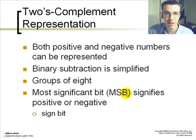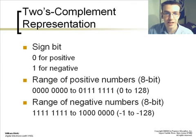The two's complement representation. Both positive and negative numbers can be represented. Binary subtraction is simplified by this representation. And it's usually done in groups of 8. The most significant bit, or the MSB, signifies positive or negative sign. The sign bit, 0 for positive or 1 for negative, is used in the two's complement representation.